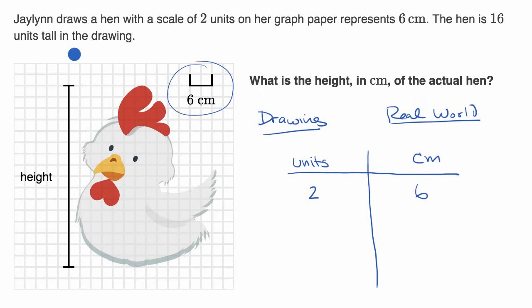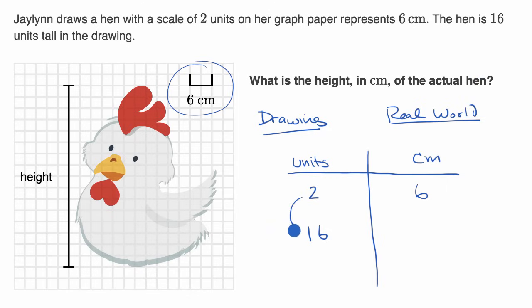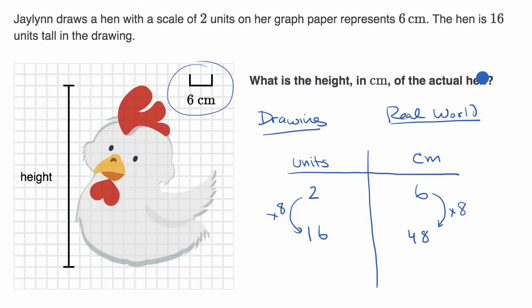The hen is 16 units tall in the drawing. What would that represent in the real world — which is the actual height of the hen? If two units represent six centimeters, and now we have eight times as many units, that's going to represent eight times as many centimeters. So six times eight is 48 centimeters.